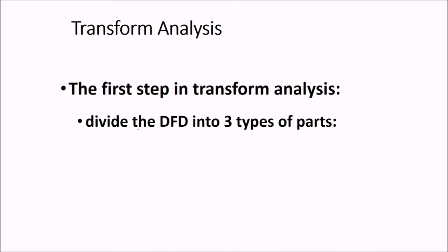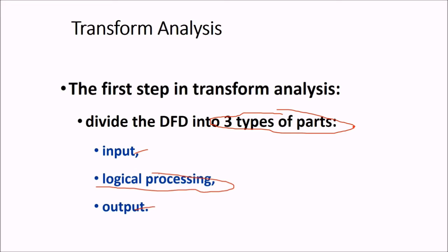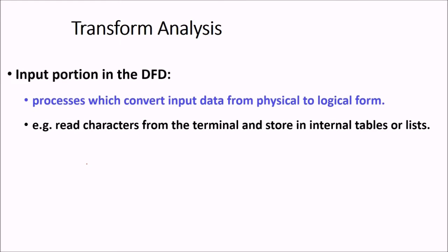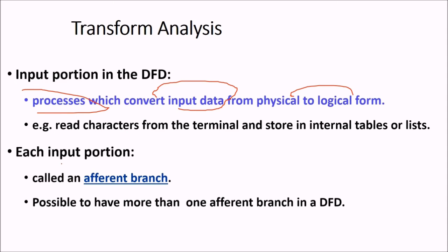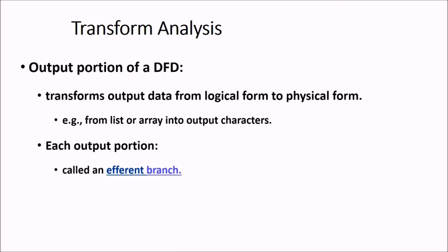There are various steps. The first step is to divide the DFD into three types of parts, input, output and logical processing. Then first part is input portion in a DFD. What it does, it processes or it represents the processes which convert or transfer or changes input data from some physical to a logical form. Just for the example, read characters from a terminal or store in internal tables or lists. So these are two different aspects which are being converted. And each input portion is called an afferent branch and this is possible to have more than one afferent branch in a DFD.